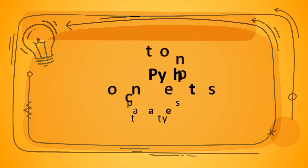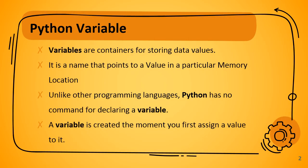A Python variable acts as a container for storing data values. The purpose of using a variable is to allow the user to store some values in the Python program, and we can use that particular set of values later by accessing these variables. It is a name that points to a value in a particular memory location.